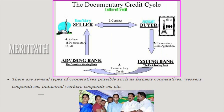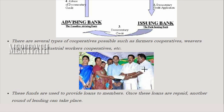There are several types of cooperatives, such as farmers cooperatives, weavers cooperatives, and industrial workers cooperatives. These cooperatives pool savings and use the funds to provide loans to members. Once these loans are repaid, another round of lending can take place.